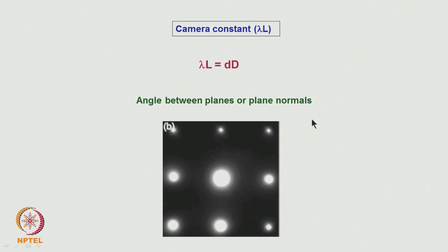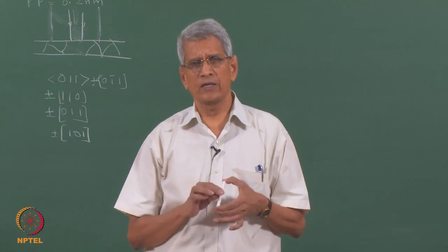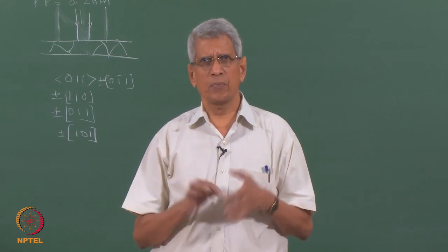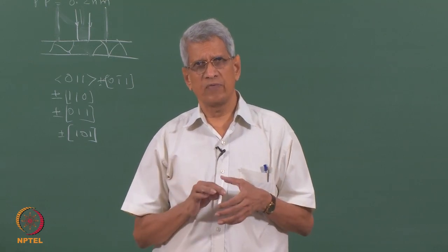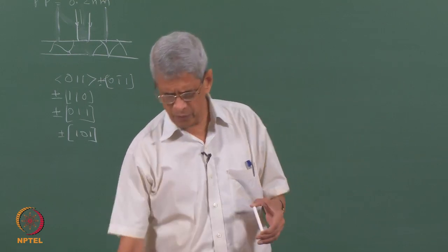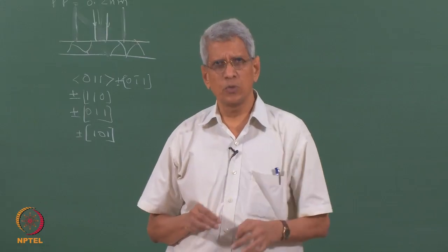Now let us index a simple diffraction pattern. To index it, we need certain information. Electron diffraction is not used to find out crystal structure information — that is done by X-ray diffraction. We assume prior knowledge of the crystal structure. In this case we assume it is a cubic, specifically FCC, structure.